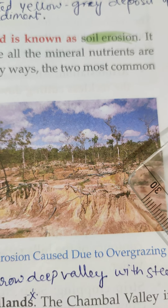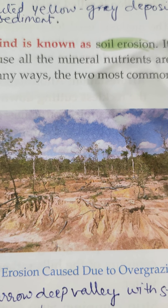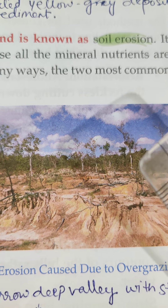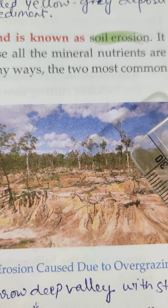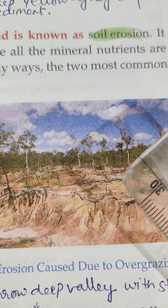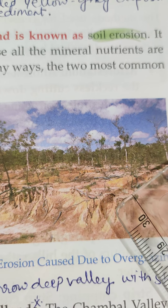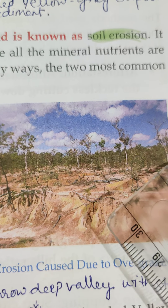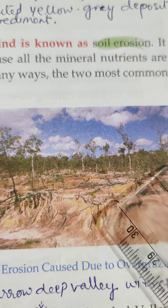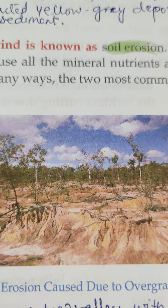Sheet erosion occurs during heavy rainfall when the volume of runoff is very high. If the top soil is not protected by sufficient plants and trees, it gets washed away by the force of surface runoff. This is known as sheet erosion.